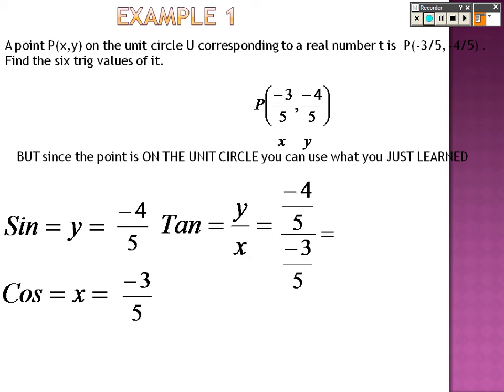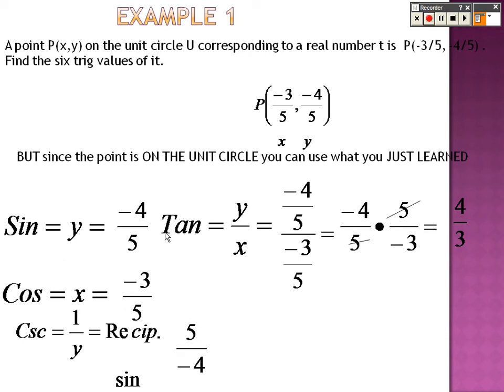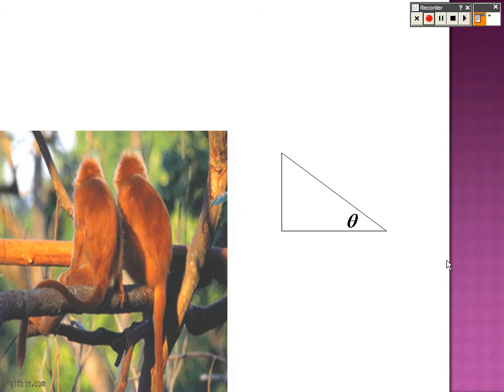Tangent is negative 4/5 over negative 3/5, but remember, two fractions is like saying multiply by the reciprocal, so the fives cancel out, and the negatives will even cancel out, giving you 4/3. So all you need to do to find the other three trig functions is just flip them, so cosecant is 5 over negative 4, secant is 5 over negative 3, cotangent is 3/4, and there are your final answers.